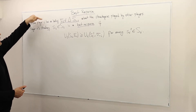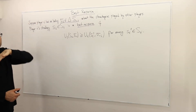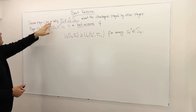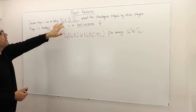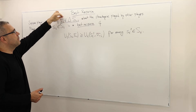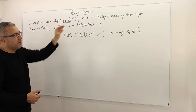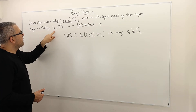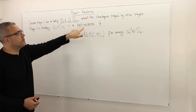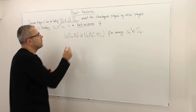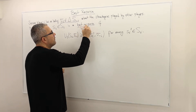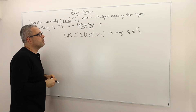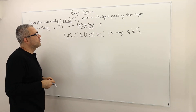Suppose that player i has a belief — let's denote it by sigma sub minus-i — about the strategies played by the other players. So player i's strategy si is called best response, or sometimes best reply. Some textbooks use best reply; I usually call it best response.